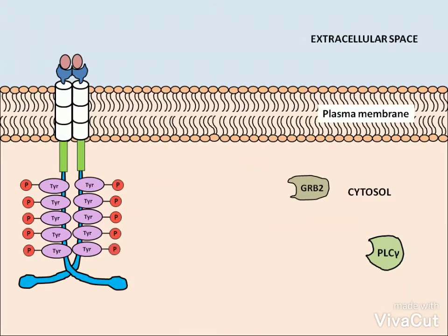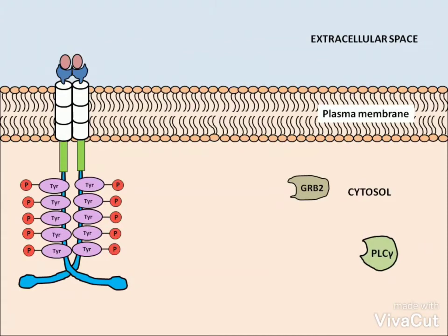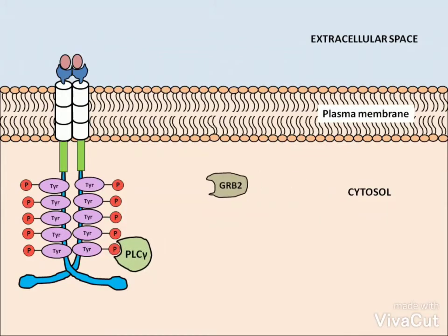This cross-phosphorylation produces tyrosine phosphate. The formation of tyrosine phosphate residues on the receptor creates binding sites for cytosolic proteins like PLC-gamma and GRB2 that contain SH2 domains.